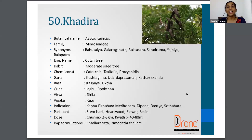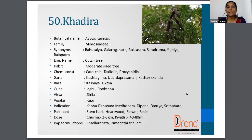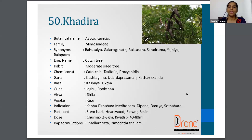The next one is Kadira. The botanical name is Acacia catechu, Mimosae family. Synonyms are Galaroghanut, Rakthasara, Saaradhruma, etc. The English name is Kach tree. The parts used are stem bark, heartwood, and flower or resin. The dosage of the Churna is 2 to 3 gram, and Kvatha is 40 to 80 ml.